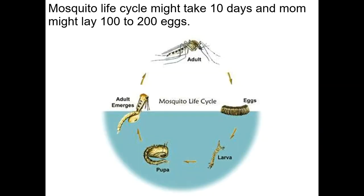If you look at a typical mosquito, it might take about 10 days for a mom to grow up and lay a hundred to two hundred eggs. Those eggs aren't cared for at all — they're just laid in the water and mom takes off.